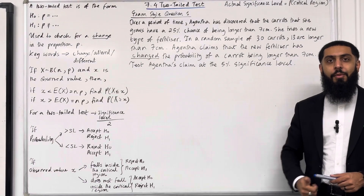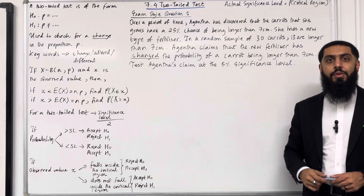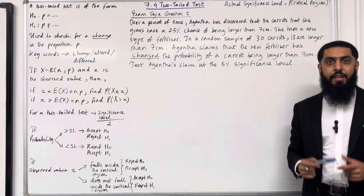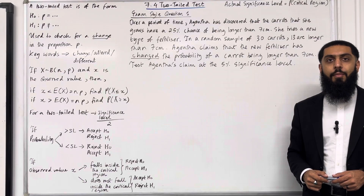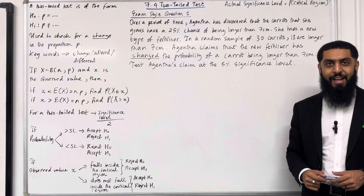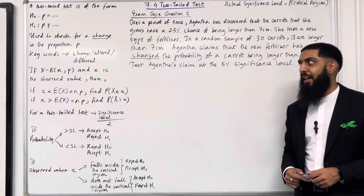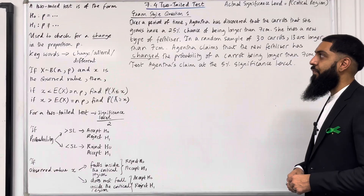Welcome back. In this teaching video, I'm looking at 7.4 two-tailed test. 7.4 represents Chapter 7, Section 4 of the Pearson A-Level Maths Year 1 textbook. Let's go through the key facts of this section.